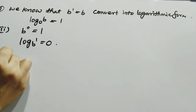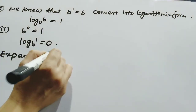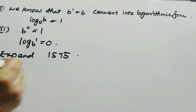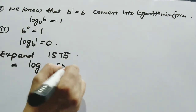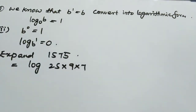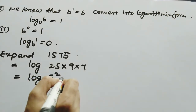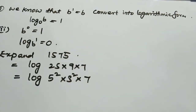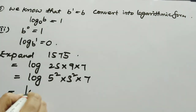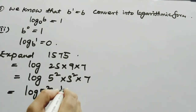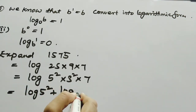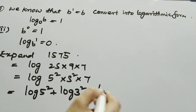Let us do some problems. Expand 1575 using logarithm properties. Factorize 1575 and you get 25 × 9 × 7, which can also be written as 5² × 3² × 7. Using the first property (product rule): log(5²) + log(3²) + log 7.